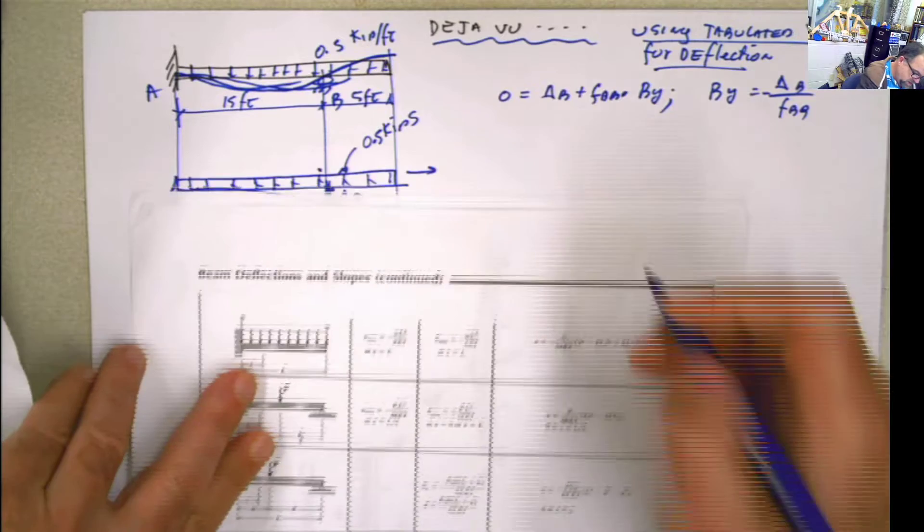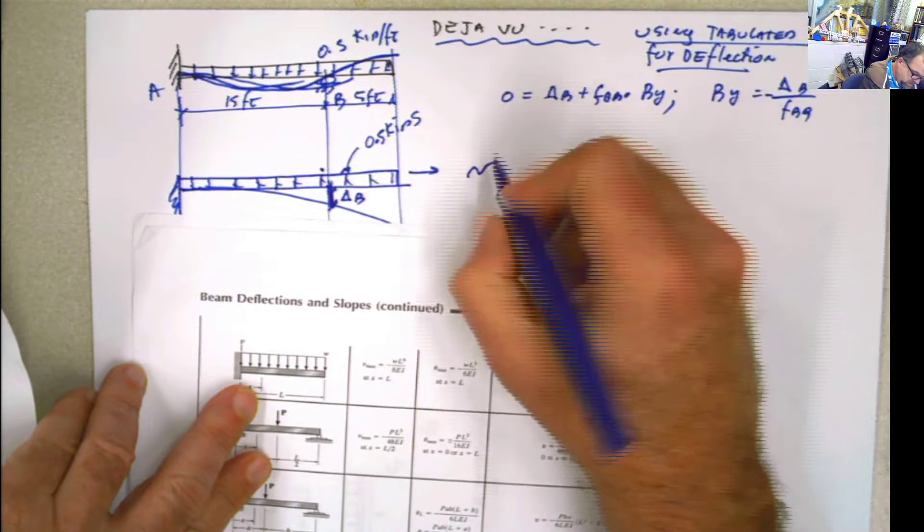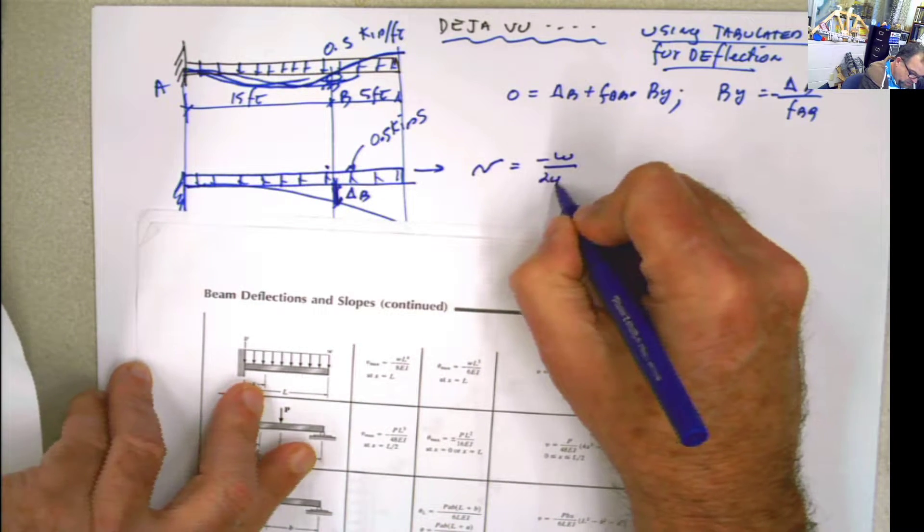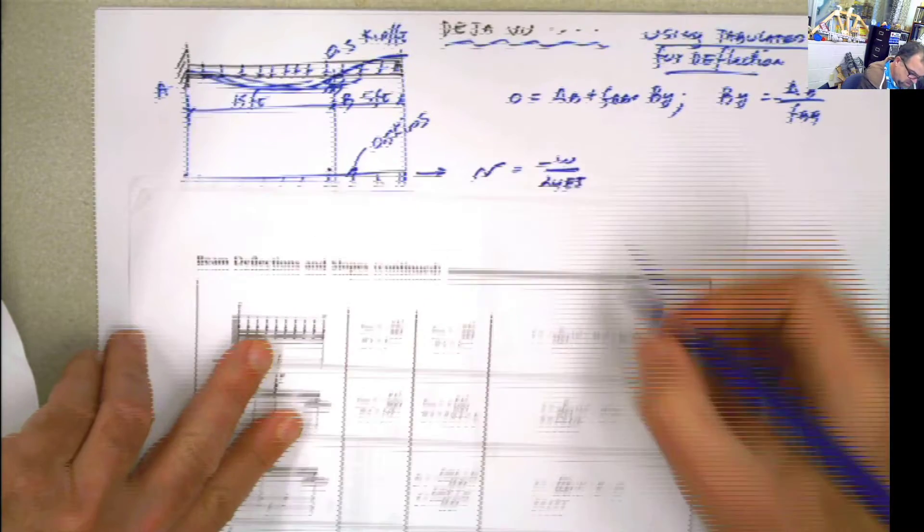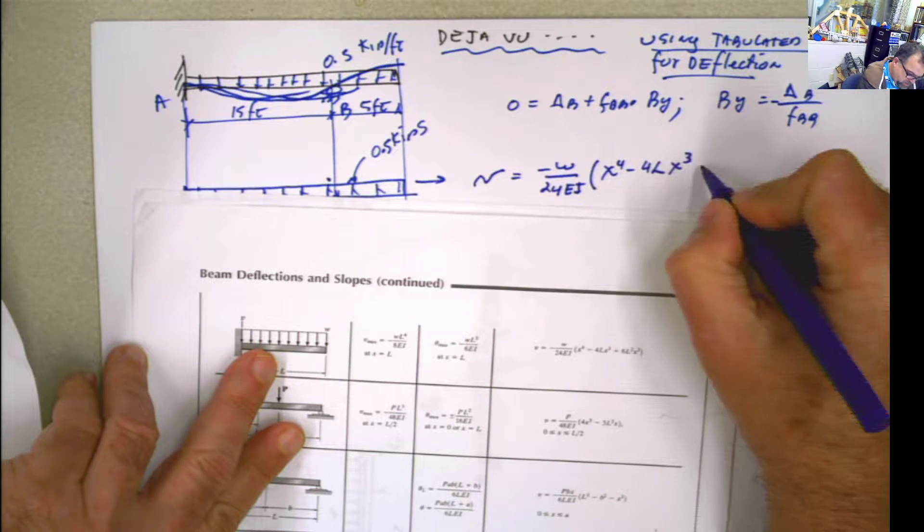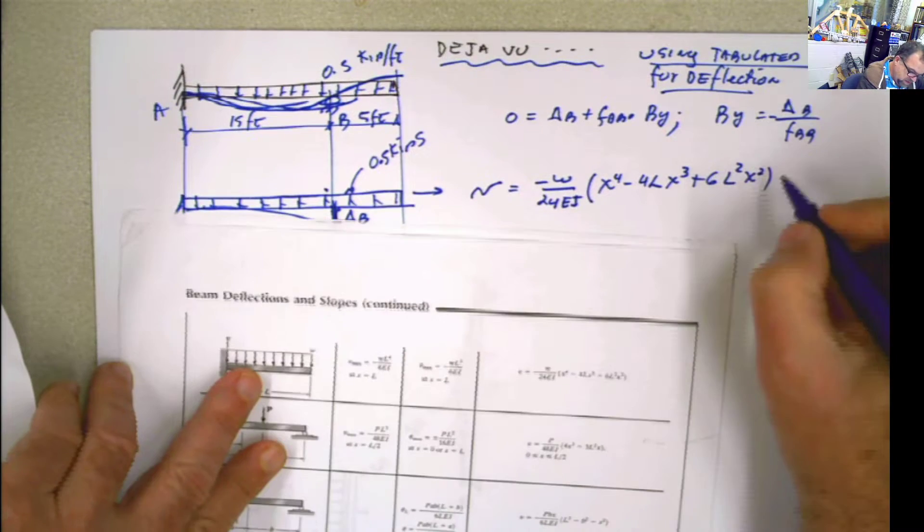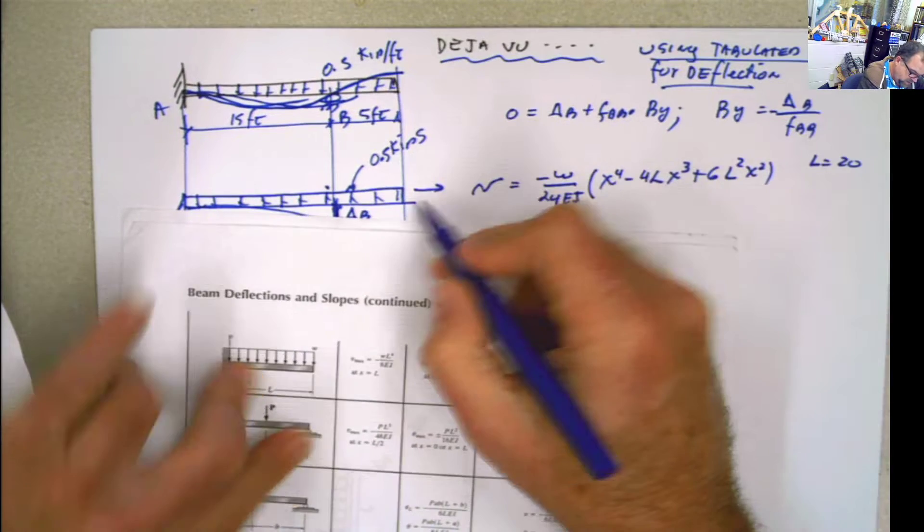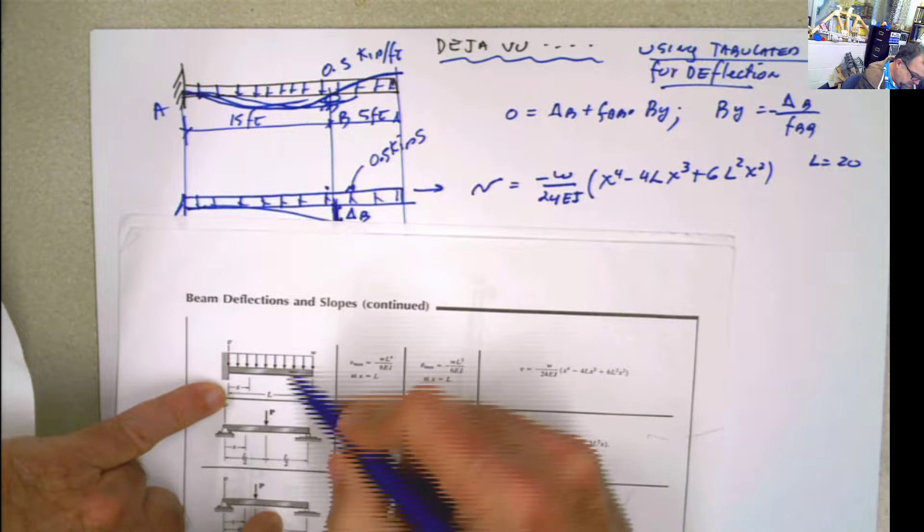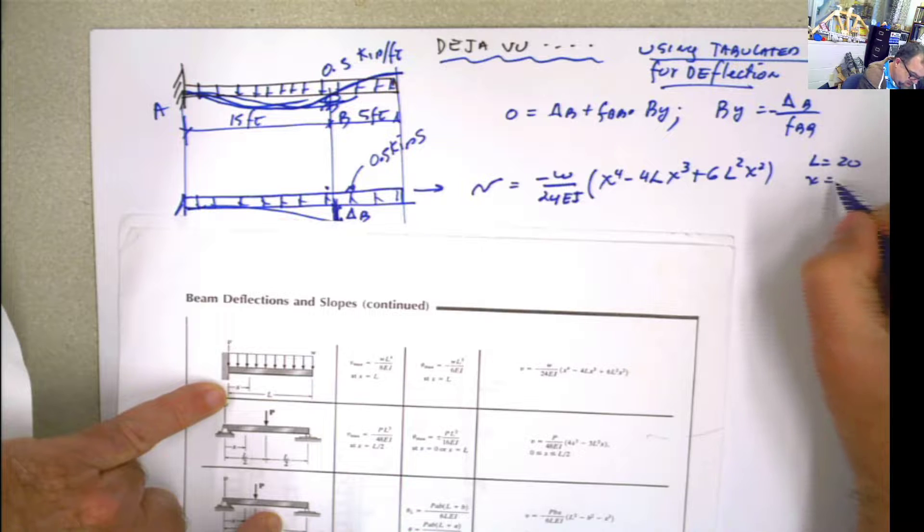The equation is deflection here. Deflection here is going to be equal to negative w divided by 24 e i. I'm just following this. OK, x to the 4 minus 4 l x to the third plus 6 l squared x squared. This is the equation. Now, once again, in our case, l is 20. 20, the total length, 20. x is the point where you want to calculate the deformation, which in this case is x is 15.